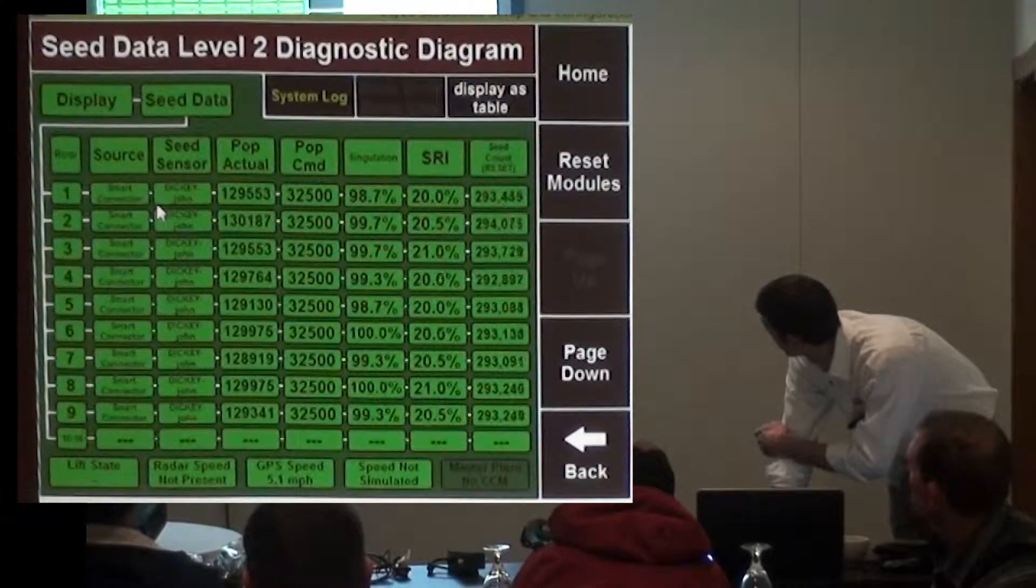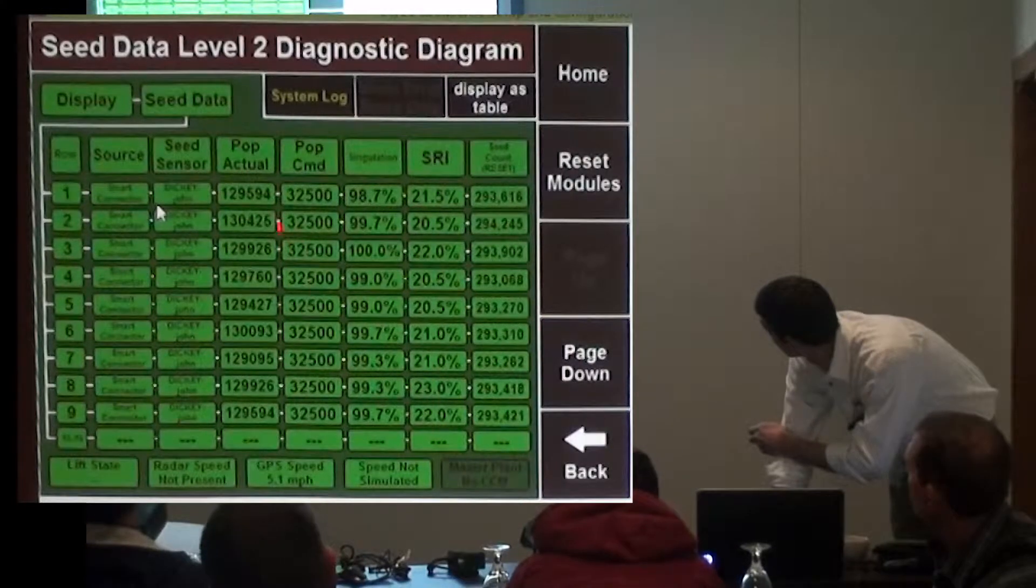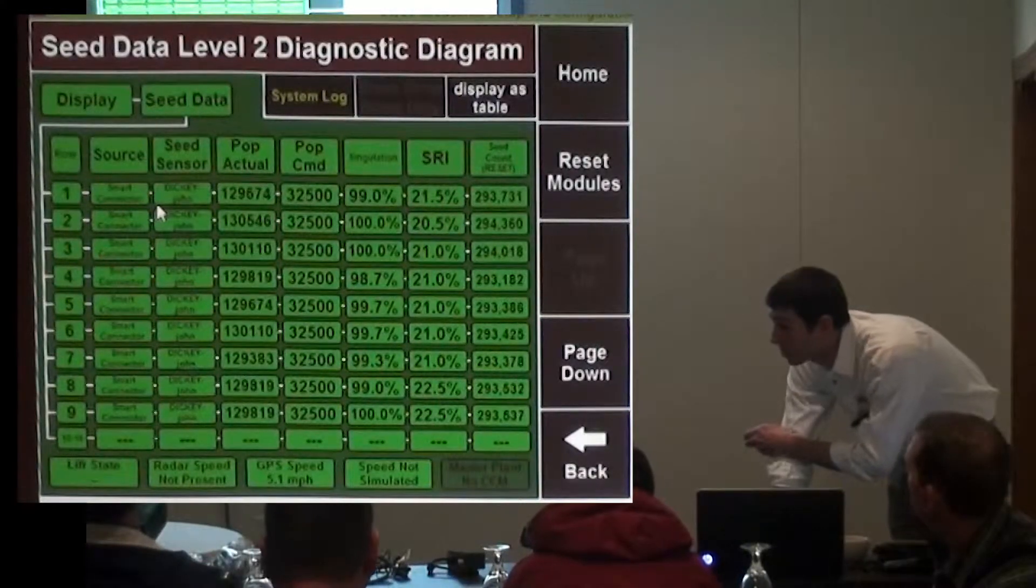Green is good, and it's giving you all of these values for every single seed tube sensor.